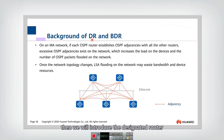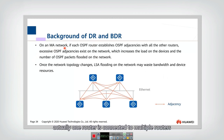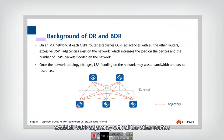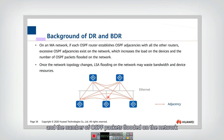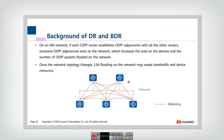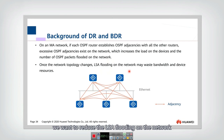Now we will introduce the designated router and backup designated router. On a multiple access network, one router is connected to multiple routers. If each OSPF router establishes OSPF adjacency with all other routers — for example, in an Ethernet network where every router establishes adjacency with all others — that increases the load on devices and the number of OSPF packets flooded on the network. There will be a lot of link state advertisements transmitted, which wastes bandwidth and device resources.